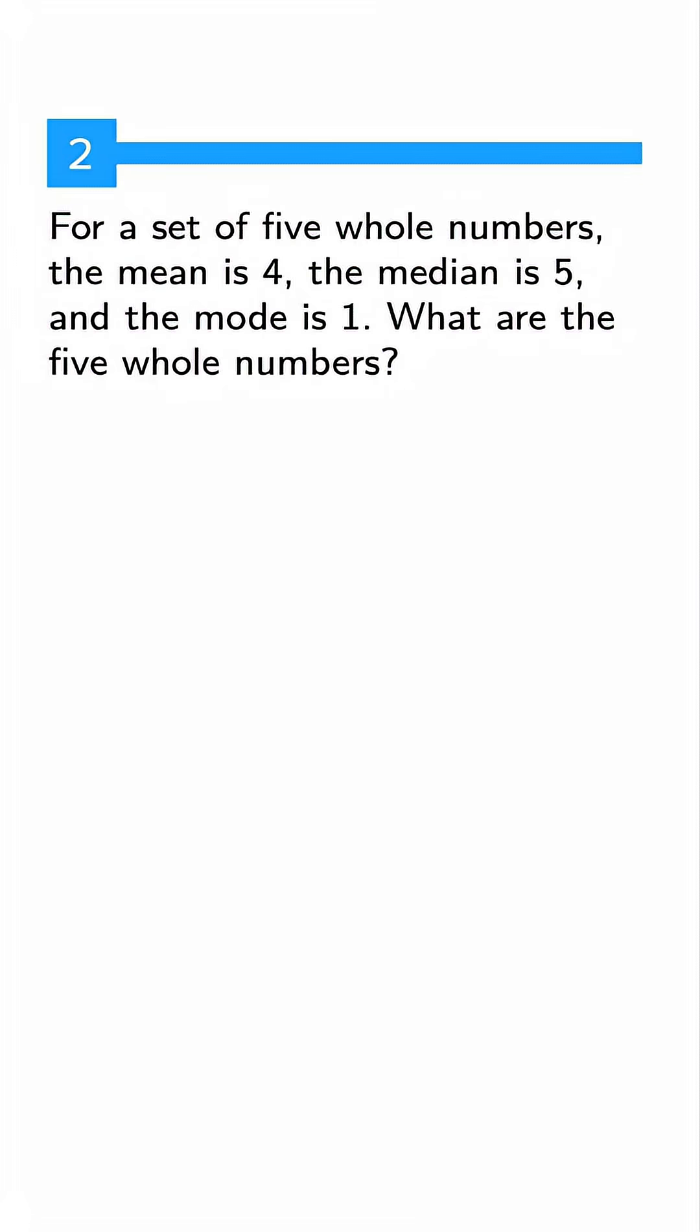This SAT question is the perfect mix of logic and pattern spotting. For a set of five whole numbers, the mean is four, the median is five, and the mode is one. What are the five whole numbers?